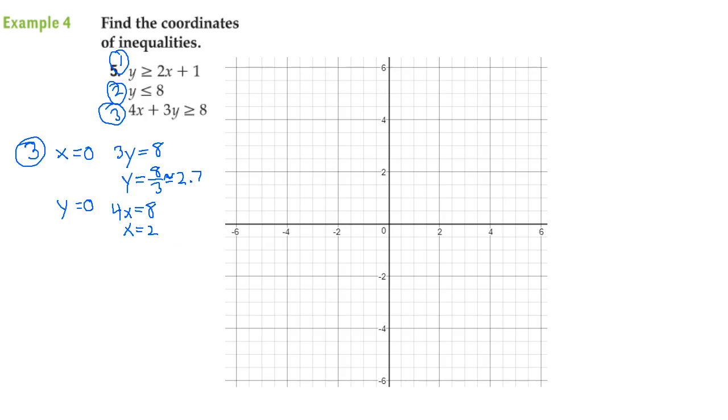From this, we get two results. We get a point (0, 2.7). That's x, y. x is 0, y is 2.7. And we also get x is 2 and y is 0.